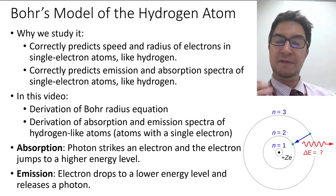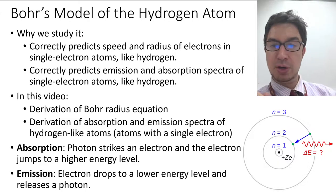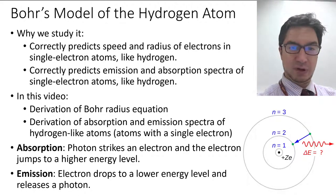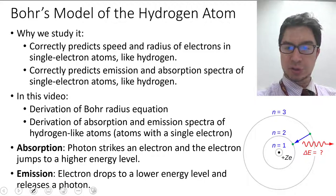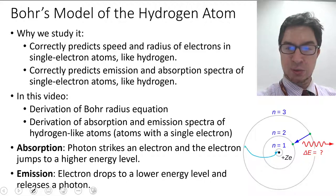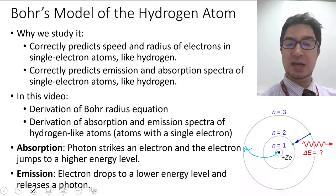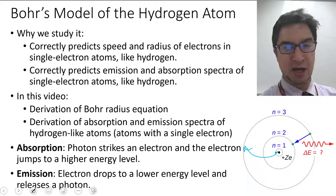Absorption is when a photon strikes an electron and the electron jumps to a higher energy level. For example, in this picture, if we have an electron in the n equals 1 level and it jumps from n equals 1 to n equals 3, that jump would be considered an absorption because the photon has given its energy to the electron, causing it to jump up to a higher energy level.